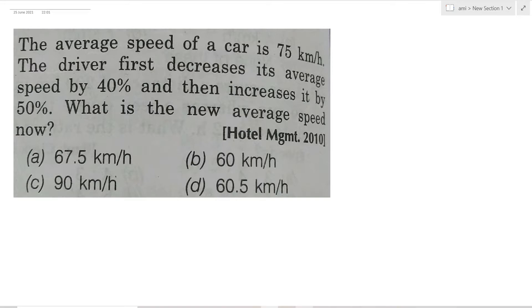The average speed of a car is 75 kilometers per hour. The driver first decreases its average speed by 40%, and then increases it by 50%. What is the new average speed now?